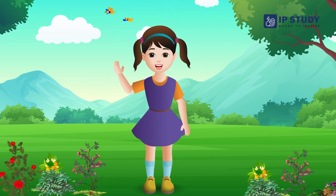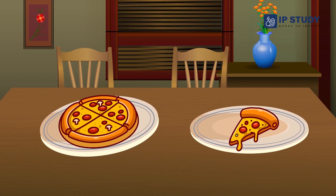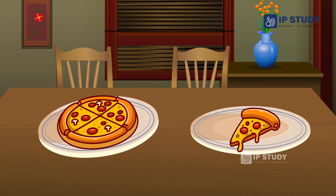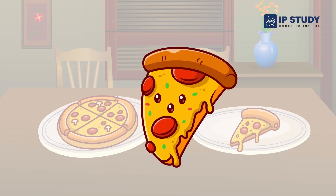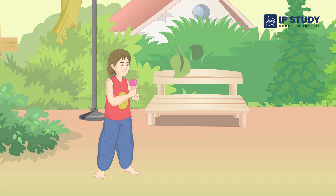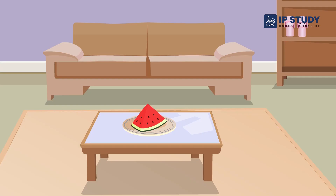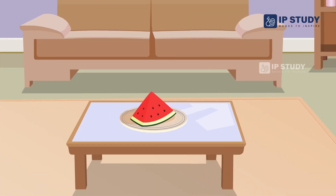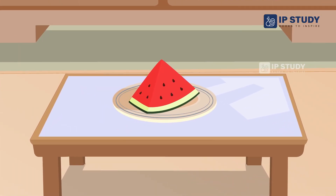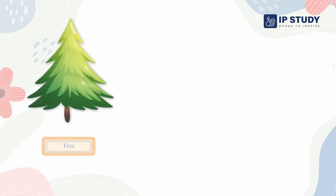Let's look at some examples of things we find around us in triangle shape. Do you see the slice of pizza on the table? The shape of a pizza slice is a triangle. Raza is eating ice cream — the shape of the ice cream cone is a triangle. There is a slice of watermelon on the plate — the shape of this watermelon slice is also a triangle.